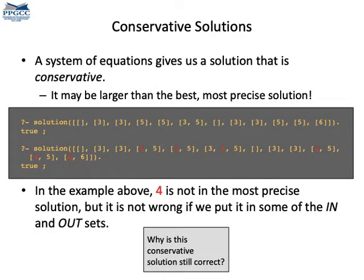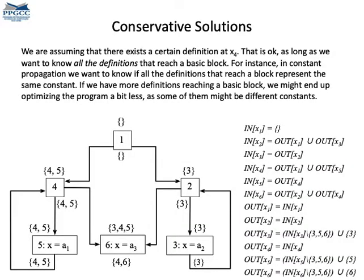Notice that we can have multiple solutions to the same system of equations. Here, I'm showing you two different solutions. Notice that the second solution with the red force is also valid, but it's more conservative, meaning that it's less tight. It contains more facts in each dataflow set. So, what's a conservative solution?